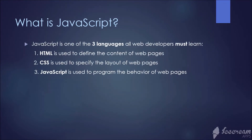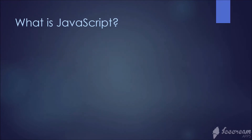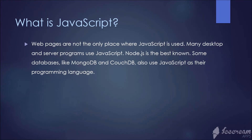JavaScript is one of the three languages all web developers must learn. First, we have HTML, which is used to define the content of web pages. Second is CSS, which is used to specify the layout of web pages. Third is JavaScript, which is used to program the behavior of web pages. Web pages are not the only place where JavaScript is used — desktop and server programs use it too. Node.js is the best known. Some databases like MongoDB and CouchDB also use JavaScript as their programming language.